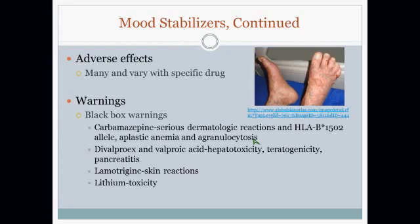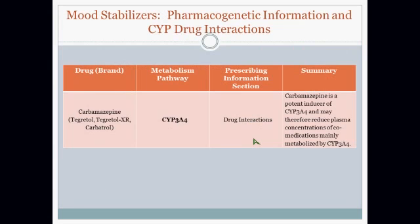You can read through the rest of the black box warnings on the slides. Carbamazepine is metabolized by CYP3A4 and is a potent inducer of 3A4, so this one is an autoinducer. Compare that to fluoxetine and paroxetine, which inhibit their own metabolism because they are metabolized by 2D6 and inhibit 2D6. Carbamazepine is actually an autoinducer because it's metabolized by 3A4 and induces 3A4.